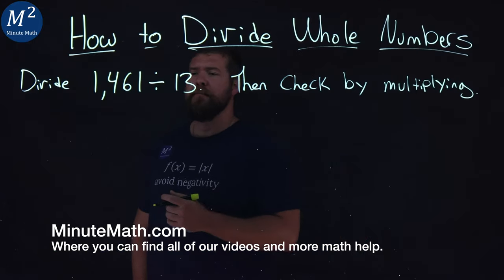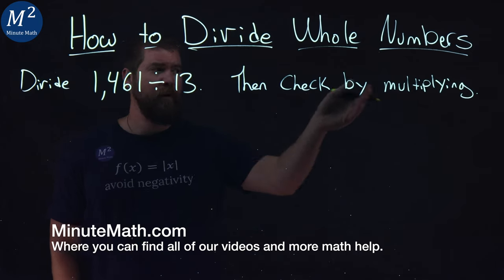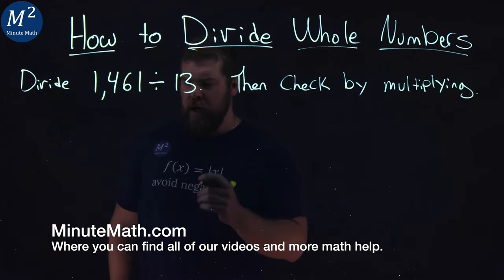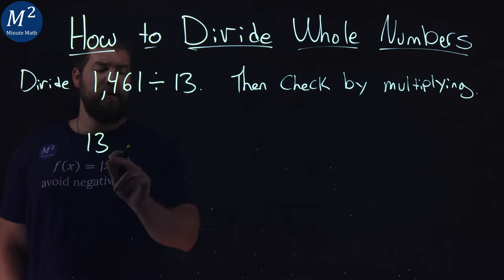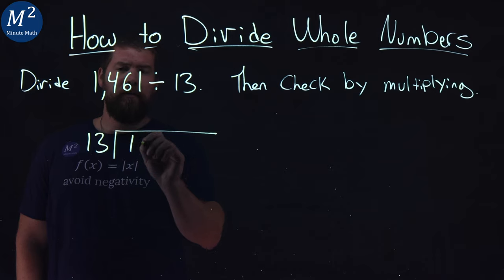We're given this problem right here. We want to divide 1,461 by 13. I'm going to check by multiplying. We're going to use long division here, but it's a little tricky because 13's a two-digit number. Our same process still applies.